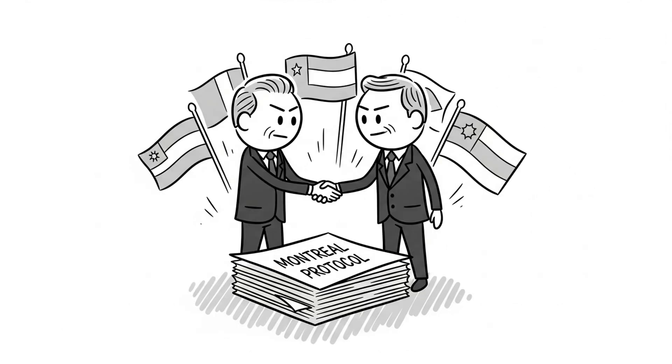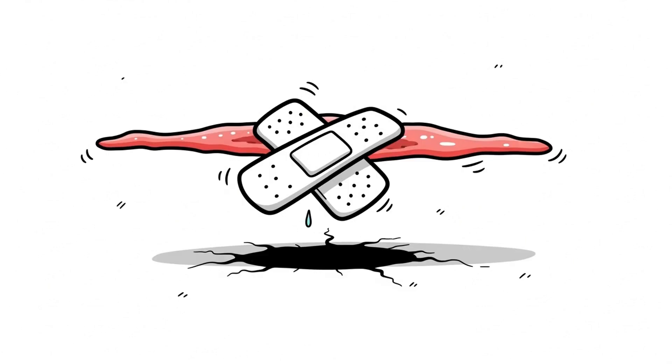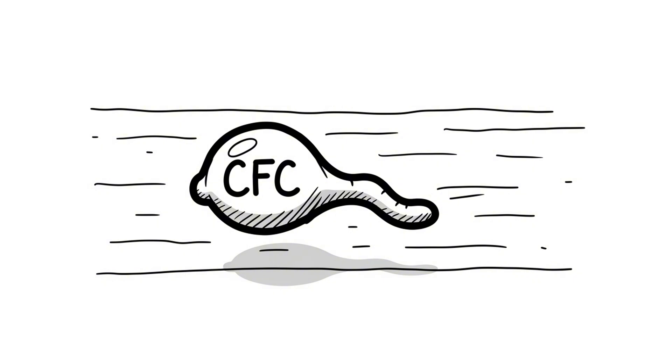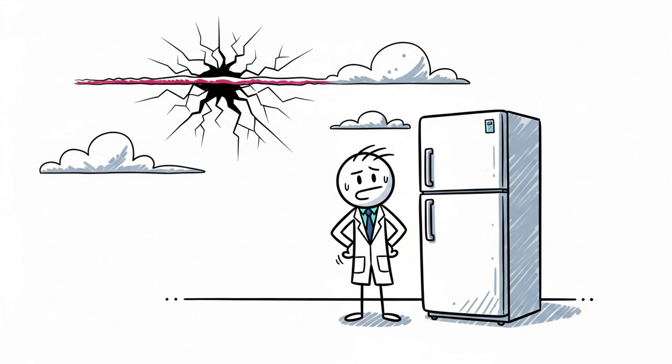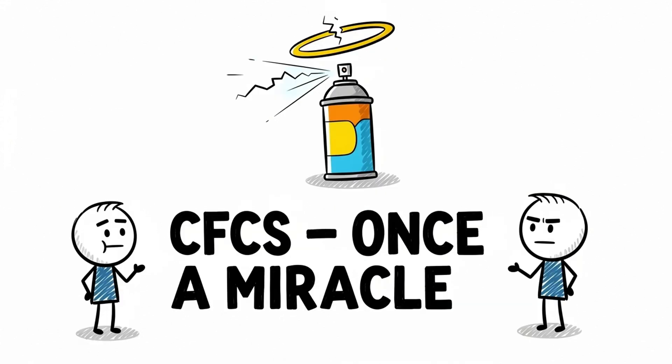For once, the world took action quickly. In 1987, the Montreal Protocol was signed. It banned CFCs. Companies switched to safer alternatives. The ozone layer began to heal. But CFCs last a long time. Some are still floating up there decades later. It's a lesson in unintended consequences. We solved one problem by accidentally tearing a hole in the sky. Even miracles in science can leave scars.